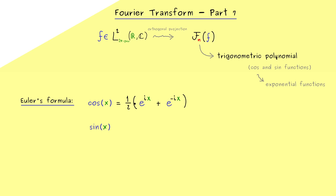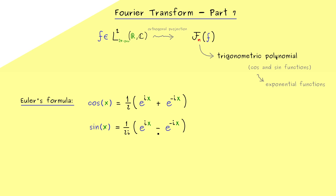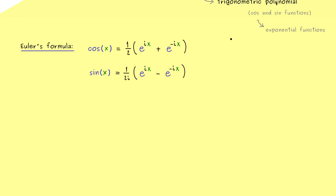This is what Euler's formula tells us for the cosine function. But we also have a nice formula for the sine function: there we have 1 over 2i times e to the power ix minus e to the power minus ix. Very similar — just with the minus sign and the factor 1 over i. This is already all we need to transform our trigonometric polynomial.